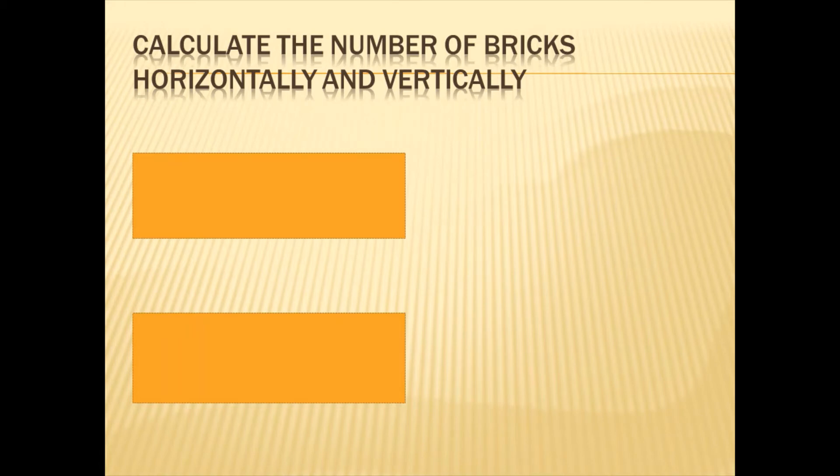The first thing that we are going to do is to calculate the number of bricks that we need horizontally and also vertically. And ultimately, we're going to multiply those two together in order to get the total number of bricks that are required in a one square meter wall.